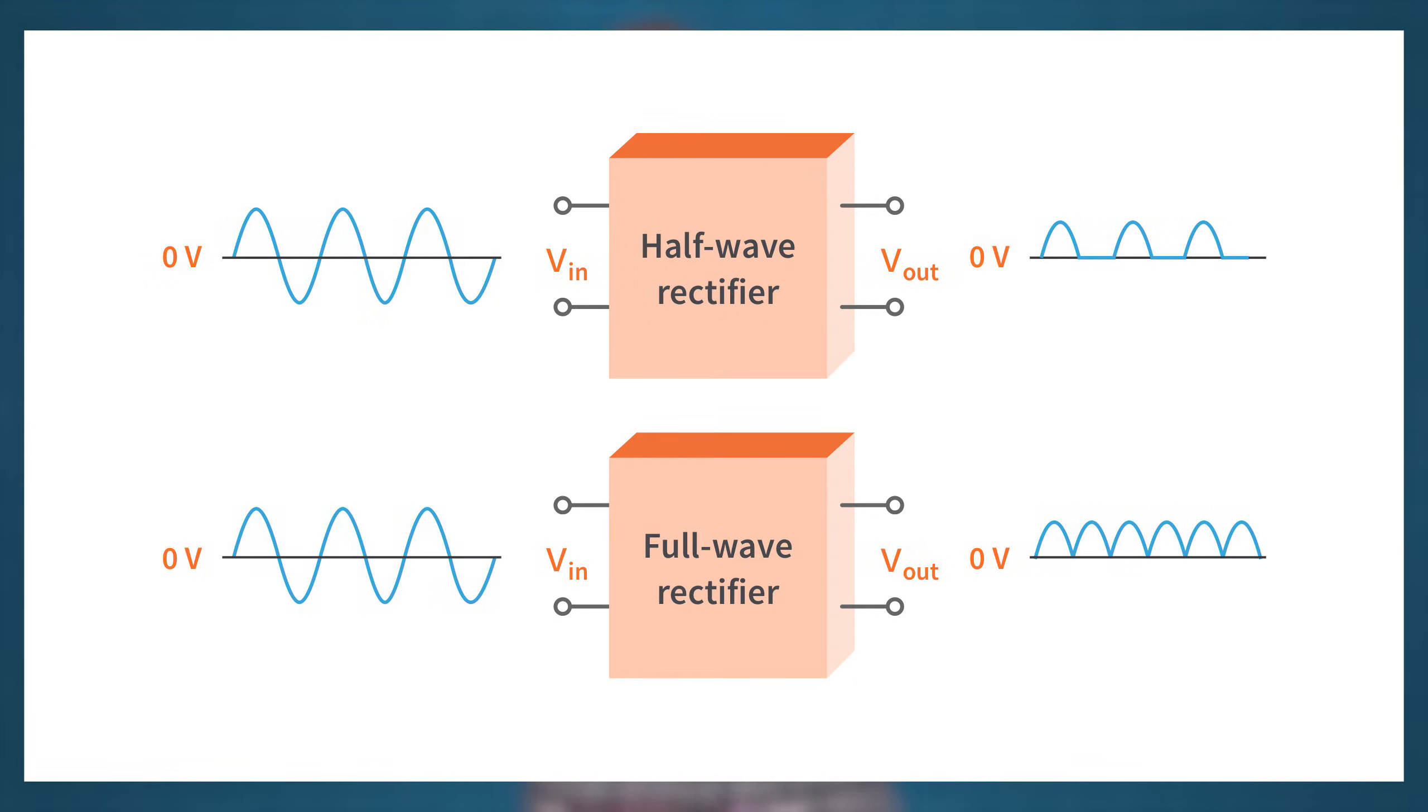Since full-wave rectifiers rectify the entire 360 degrees of the input, their output has an average value and frequency double the output of half-wave rectifiers. There are two types of full-wave rectifiers: bridge and center-tapped. For now, we will focus on the bridge type and discuss the center-tapped in another tutorial.